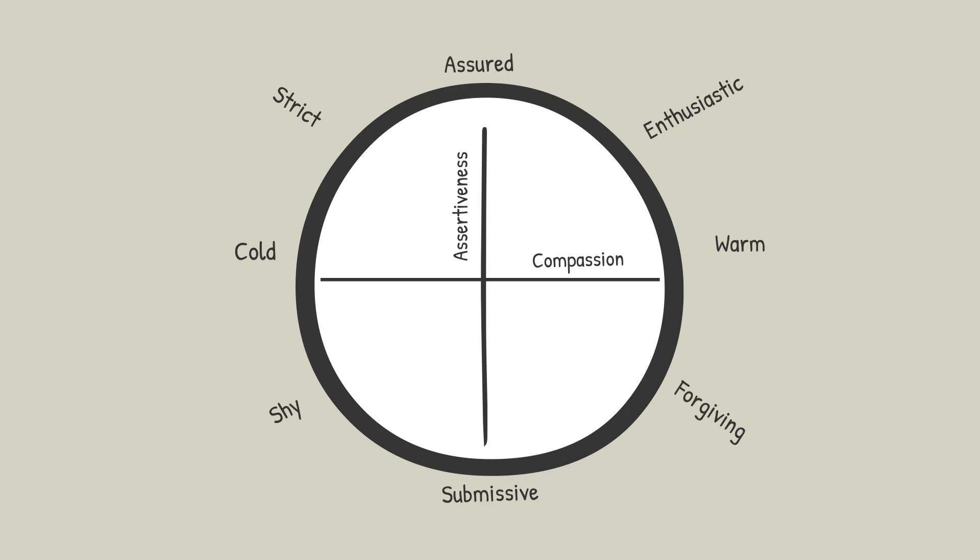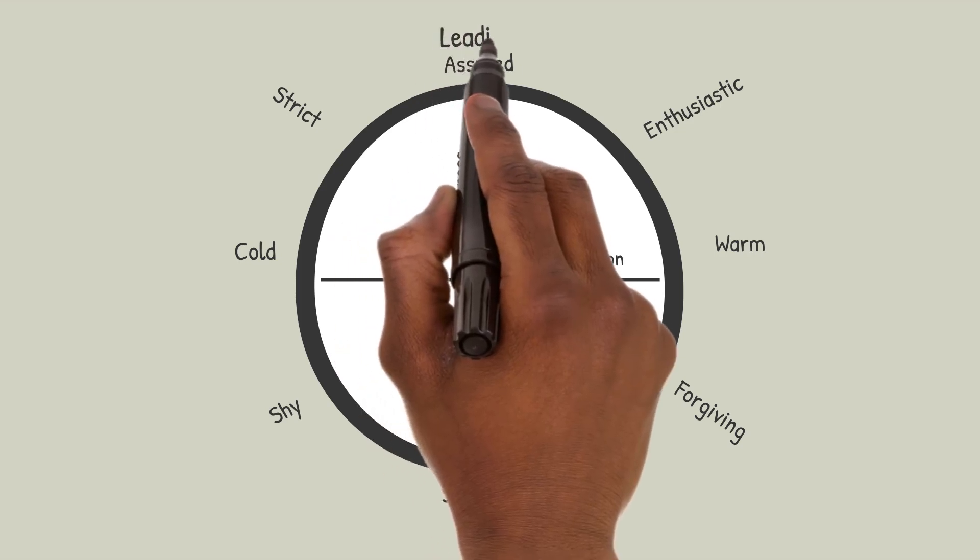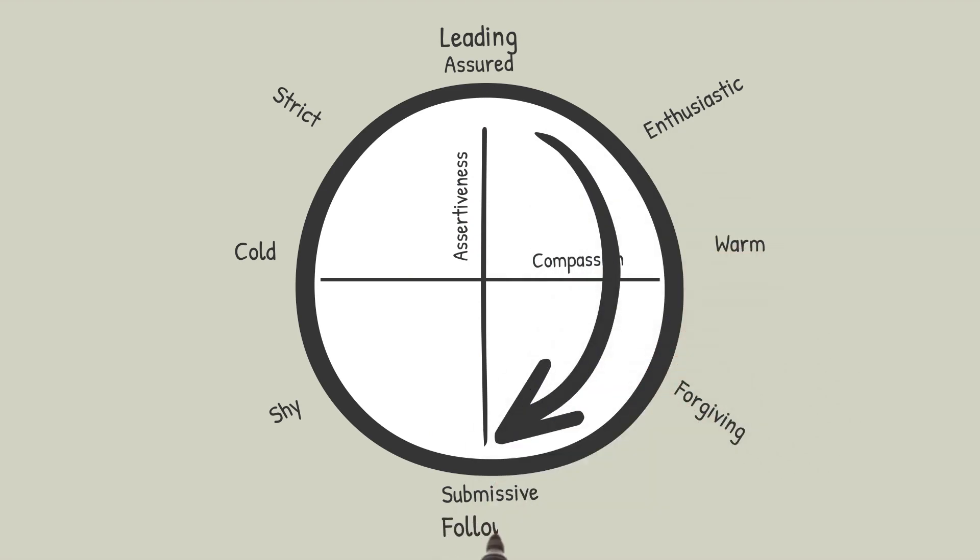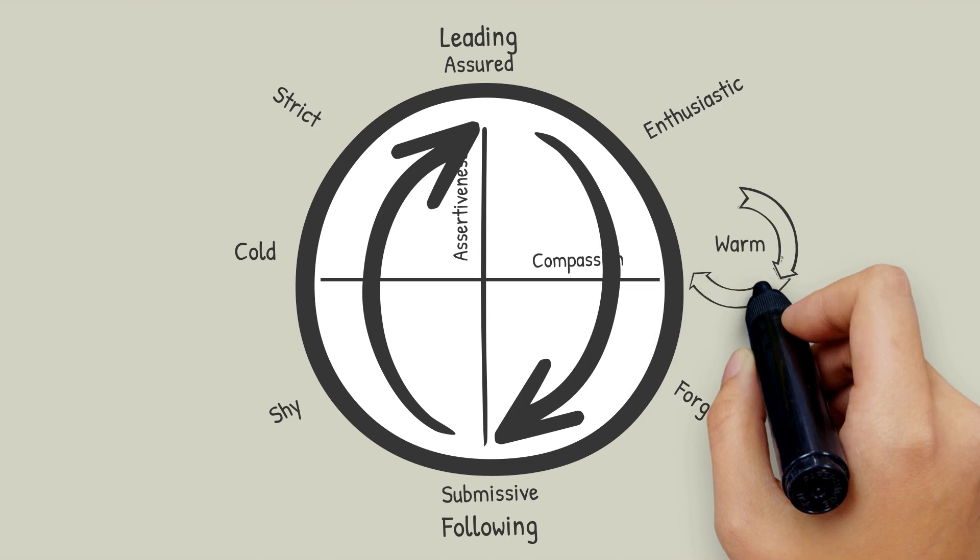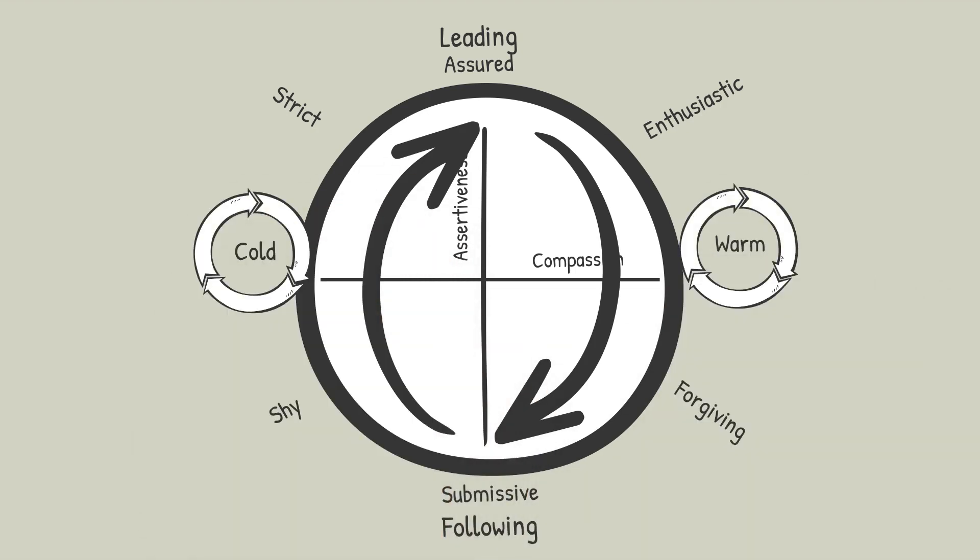This form of diagramming interpersonal behavior is connected to field theory because each of these attributes invites a response from other people and thus creates a force field. Leading or being assured invites following or being submissive. Conversely, following invites leading. Warmth invites warmth, and coldness invites coldness. In other words, at the top and bottom, you're inviting the opposite behavior in others. At the left and right, you're inviting the same behavior in others.